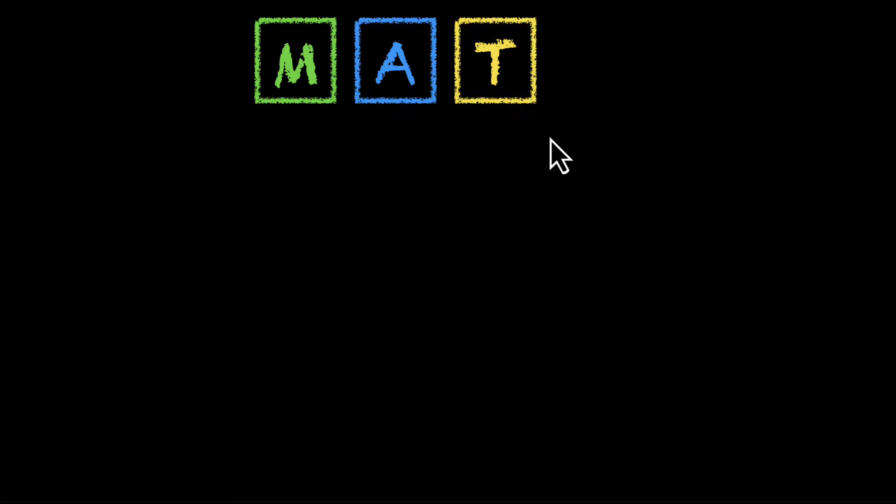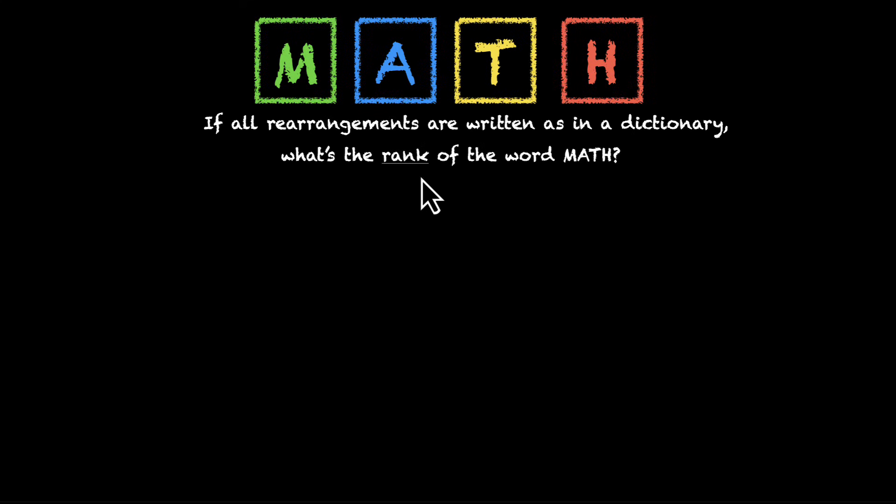Here are four letters from the word math: M, A, T, H. And the question is this: if all rearrangements are written as in a dictionary, which means they're written in alphabetical order, what's the rank of the word math?